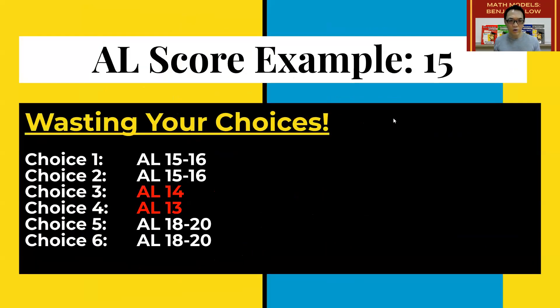This one is called wasting your choices because if you put choice one and two as 15 to 16, then your choices three and four here, being choices that are lower score, meaning that it's harder to get into, would most likely be wasted. You will not be even using these two choices. It will just skip from 15 to 16 up to choice five and six. And if you don't get any of those, then you don't get the schools.